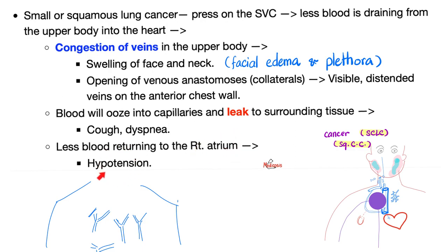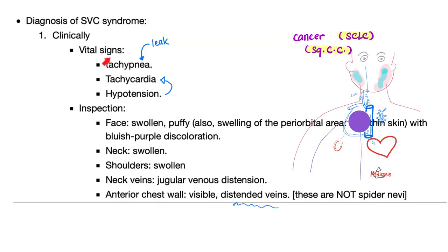Since blood pressure equals cardiac output times total peripheral resistance, I will get low blood pressure and symptoms of low cardiac output, like dizziness, fatigue, and inability to concentrate. Vital signs: tachypnea, tachycardia, hypotension. Why tachypnea? Because of the leak. Why hypotension? Because less input equals less output. Why tachycardia? This is the baroreceptor reflex — when you have hypotension, your brain will realize there is danger and cause tachycardia by activating the sympathetic nervous system.